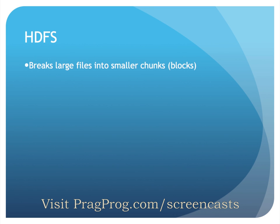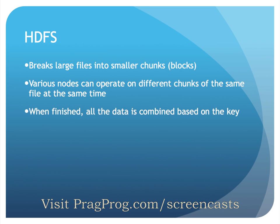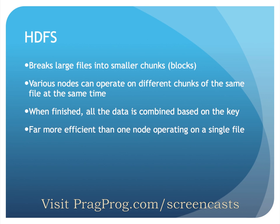That file would be physically broken up into much smaller chunks. By default, these chunks, or blocks, are 64 megabytes — often it's recommended they be 128 megabytes. The file continues to be logically 1 terabyte in size. When a mapper is operating on a terabyte file, it's actually operating on a block and not the entire file. The various nodes are operating on different chunks all at once. Once the mappers are all done, the magic takes over, and all of the data is combined based on the key. Having 10 nodes running on chunks of the same problem is much more efficient than a single node running the same problem.